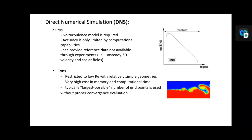For Direct Numerical Simulation, pros: no turbulence model is required, accuracy is only limited by computational capabilities, and DNS can provide reference data not available through experiment. Cons: restricted to low Reynolds number with relatively simple geometry, and very high cost in memory and computational time. That's all — thank you.